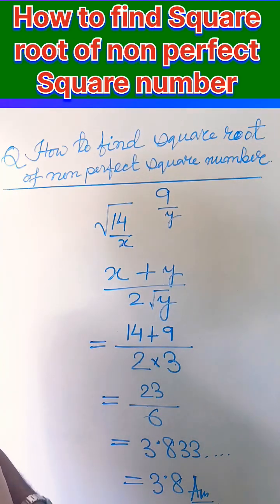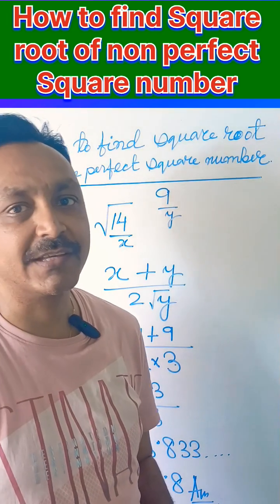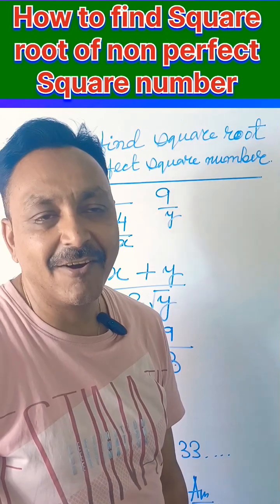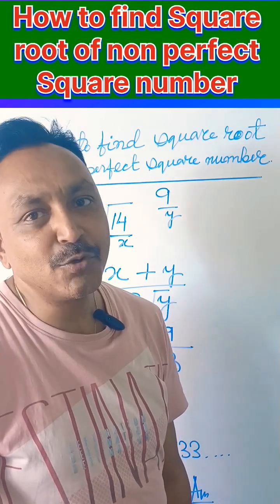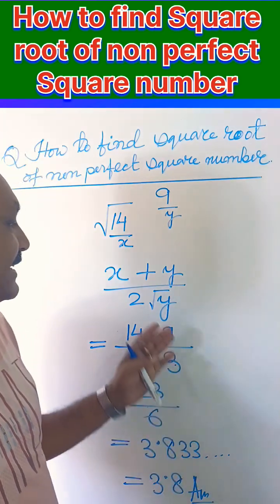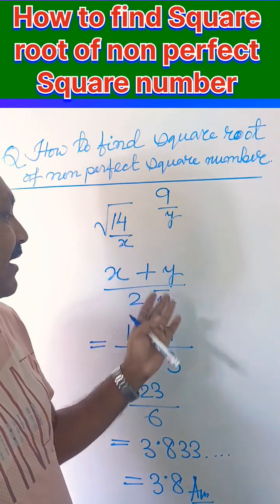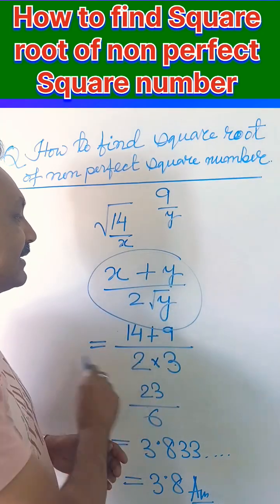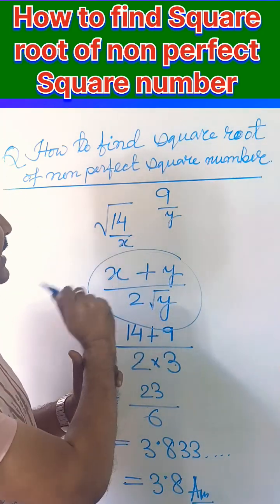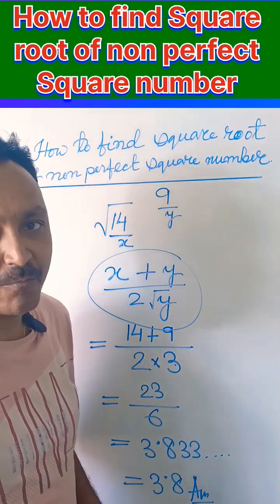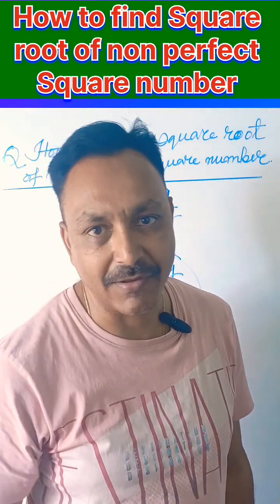14 is a non-perfect square number, and by applying this formula we can easily find out the square root of a non-perfect square number. I hope it's clear for everyone. Those who have difficulty finding the square root of a non-perfect square number can easily find the answer by remembering this formula. Then you can find the square root of any non-perfect square number. Thank you for watching.